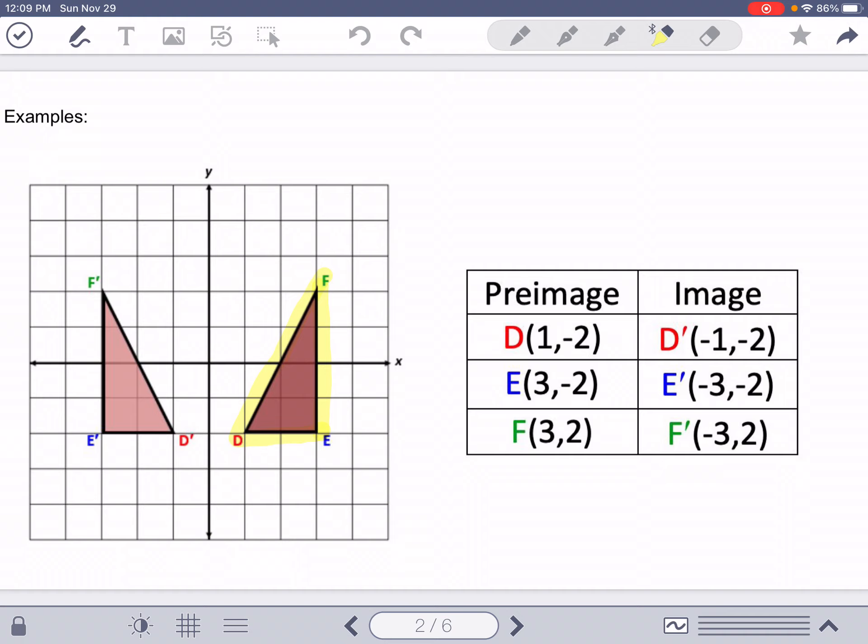So this example did a couple of different things. It's flipped across the y-axis, and so when that happens, we need to change the sign of our x value. So see how all of these x values, they changed their sign, and then if we notice the y values, they've stayed the same.